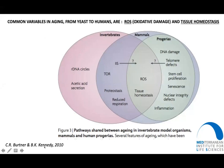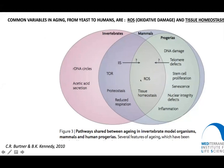This is from a review by Brian Kennedy, comparing aging in invertebrates, mammals, and human progerias. From this quite reduced complexity, they concluded that the common elements are ROS — free radicals — and tissue homeostasis. I will today address our thinking on the concepts concerning ROS, and probably won't have time for tissue homeostasis.